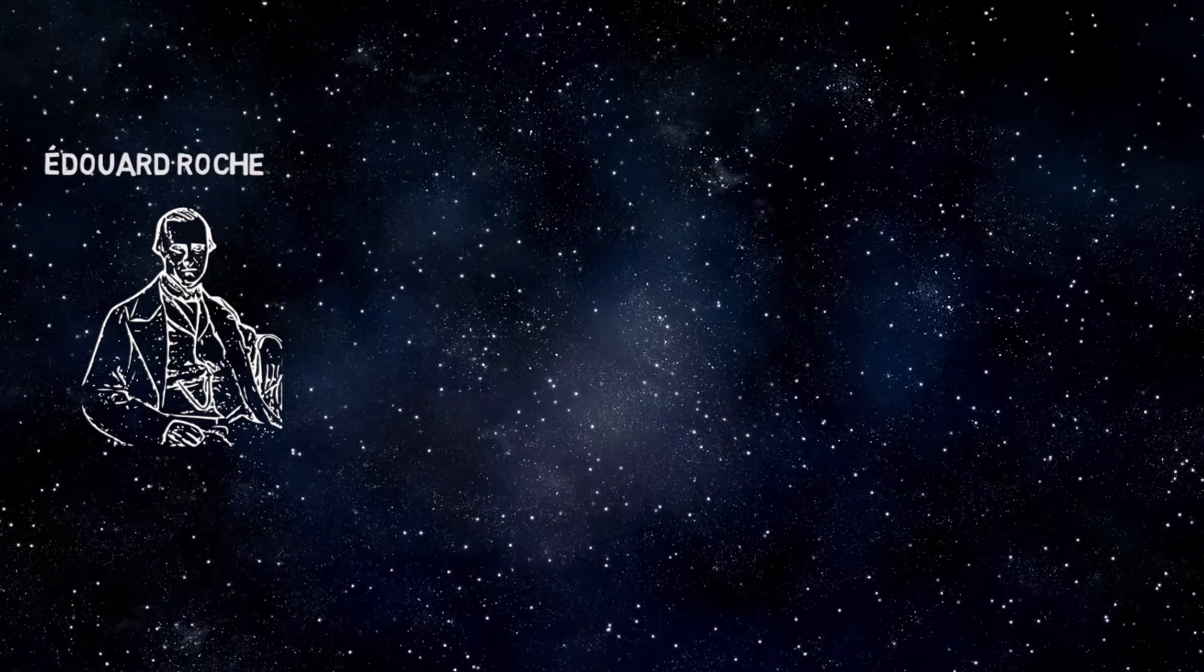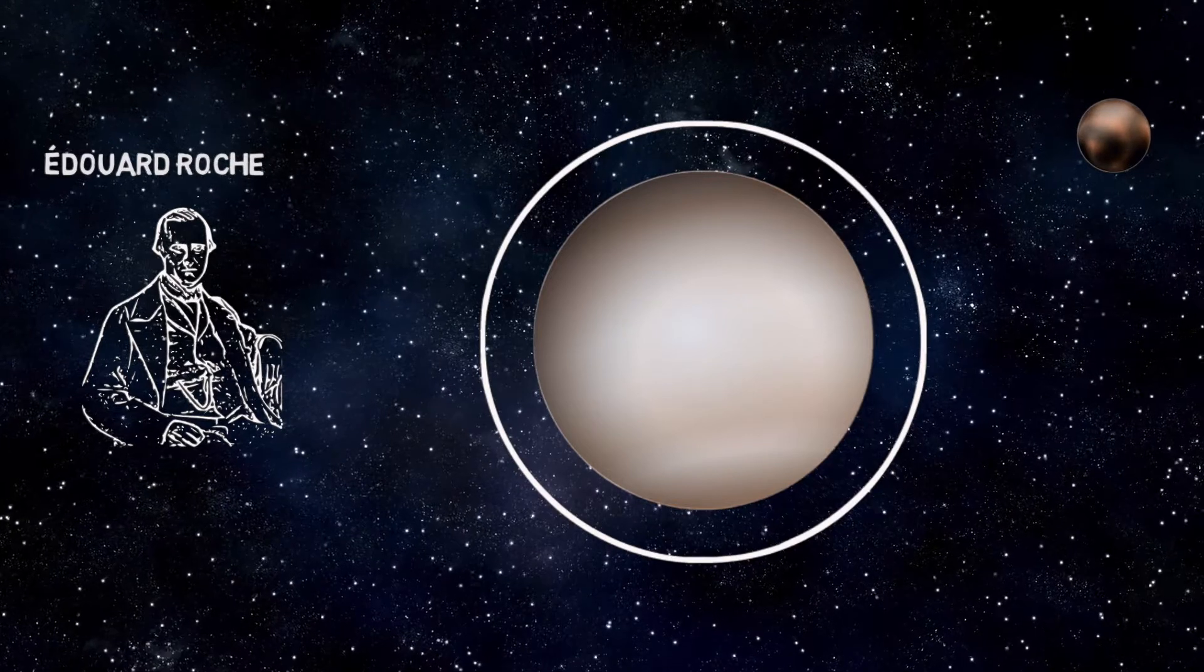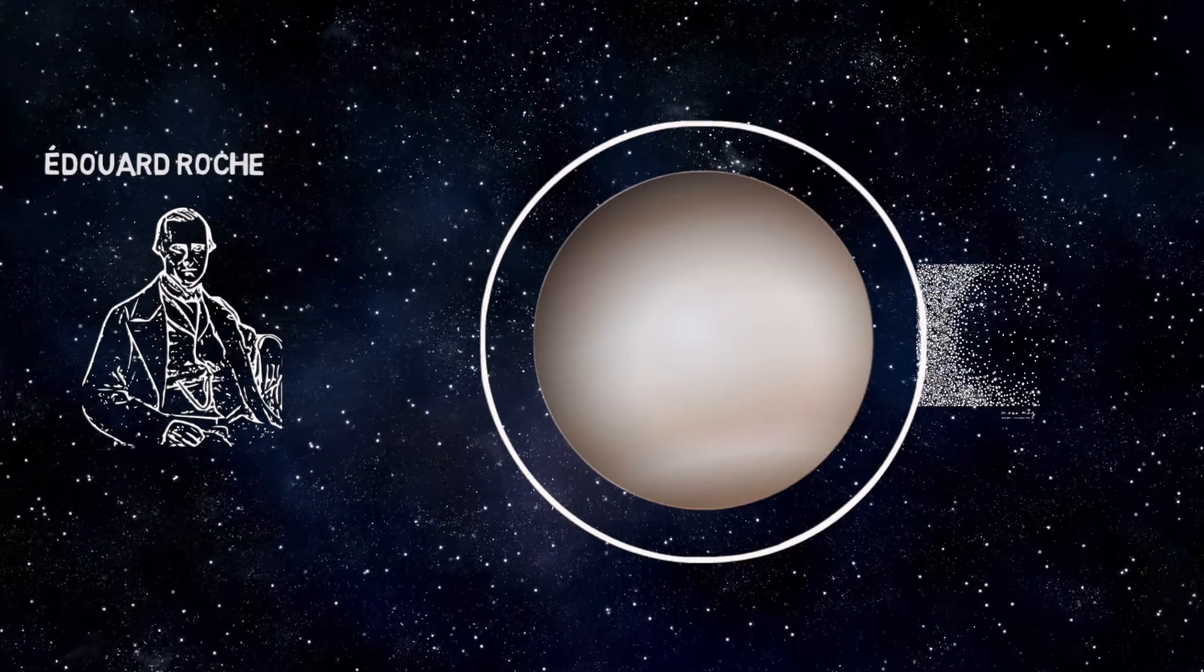This limit is the distance at which objects in orbit around a planet tend to be torn apart by the planet's gravitation.